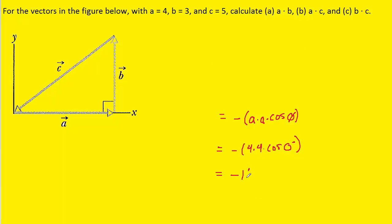And so when you plug that into your calculator, you're going to get negative 16 because the cosine of zero is one. And so this is the correct answer to part B.